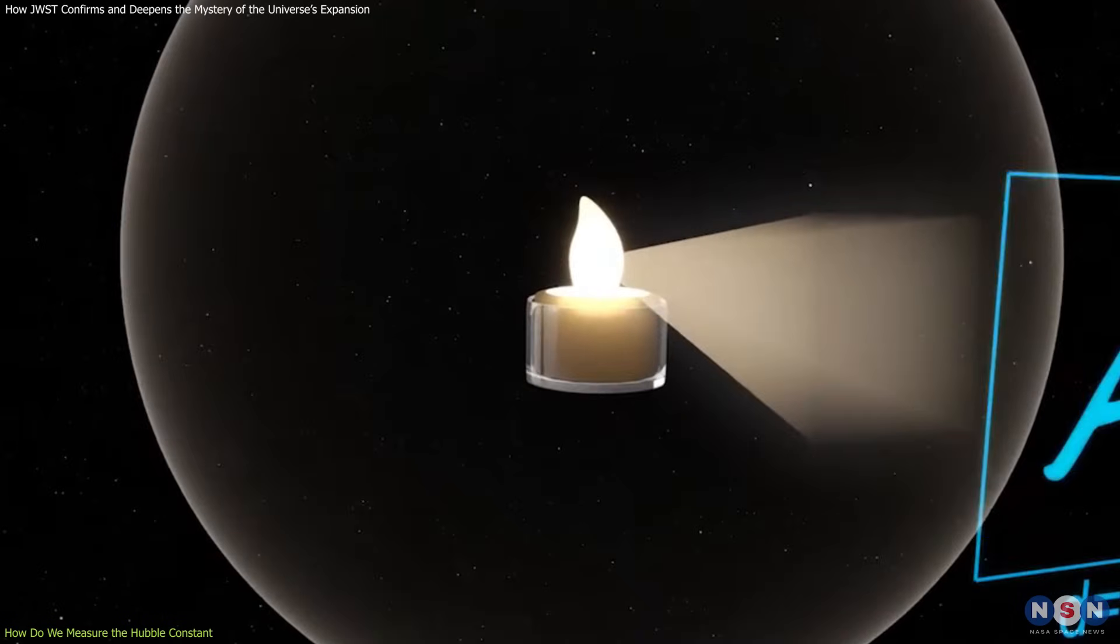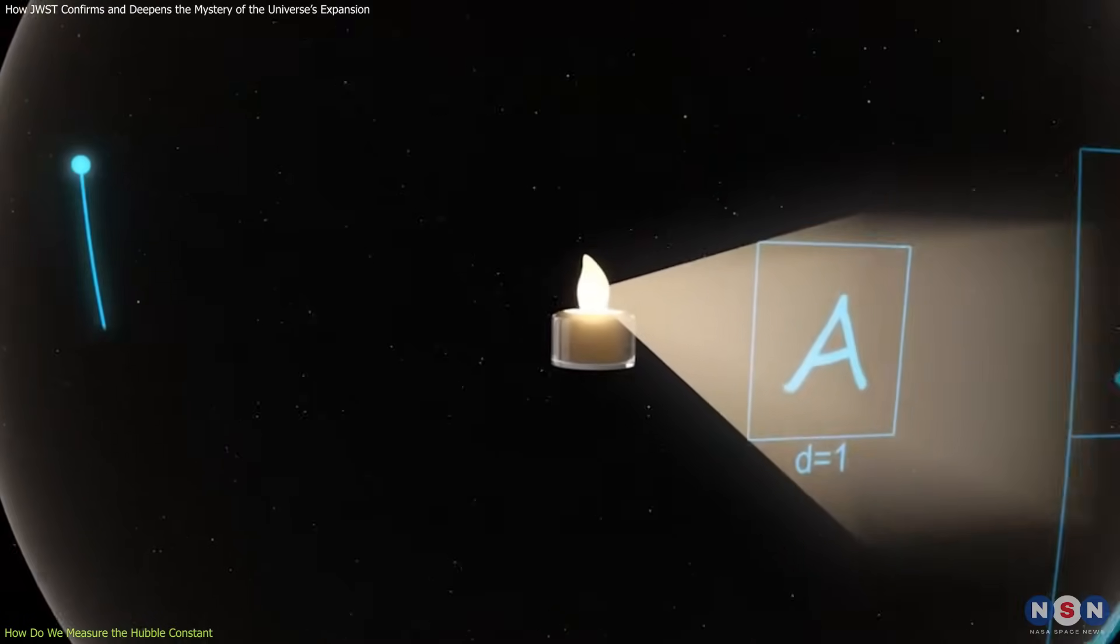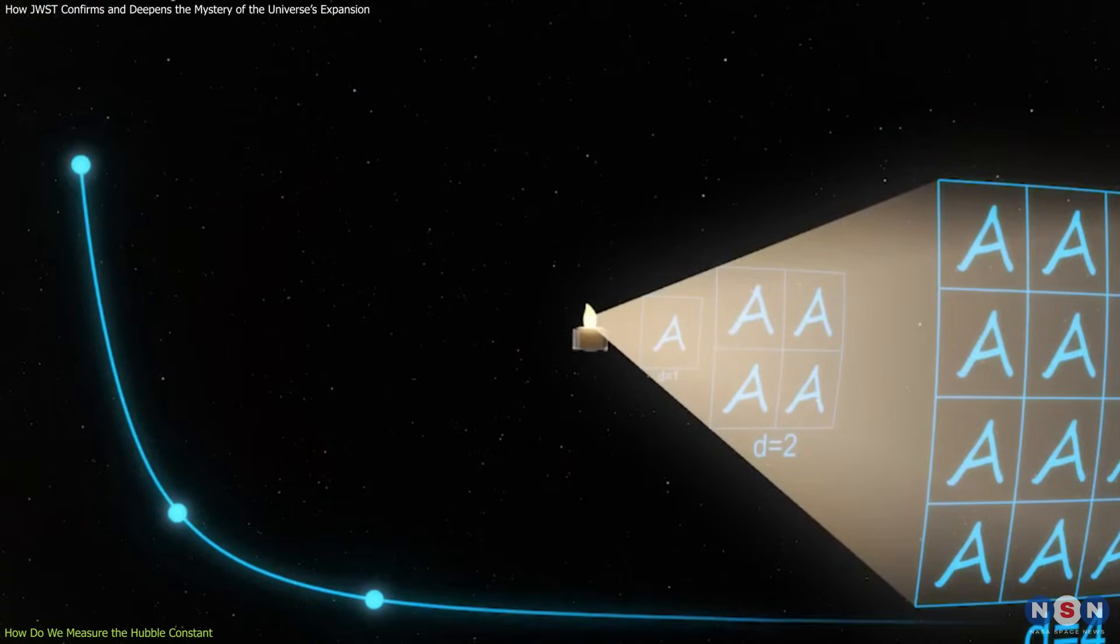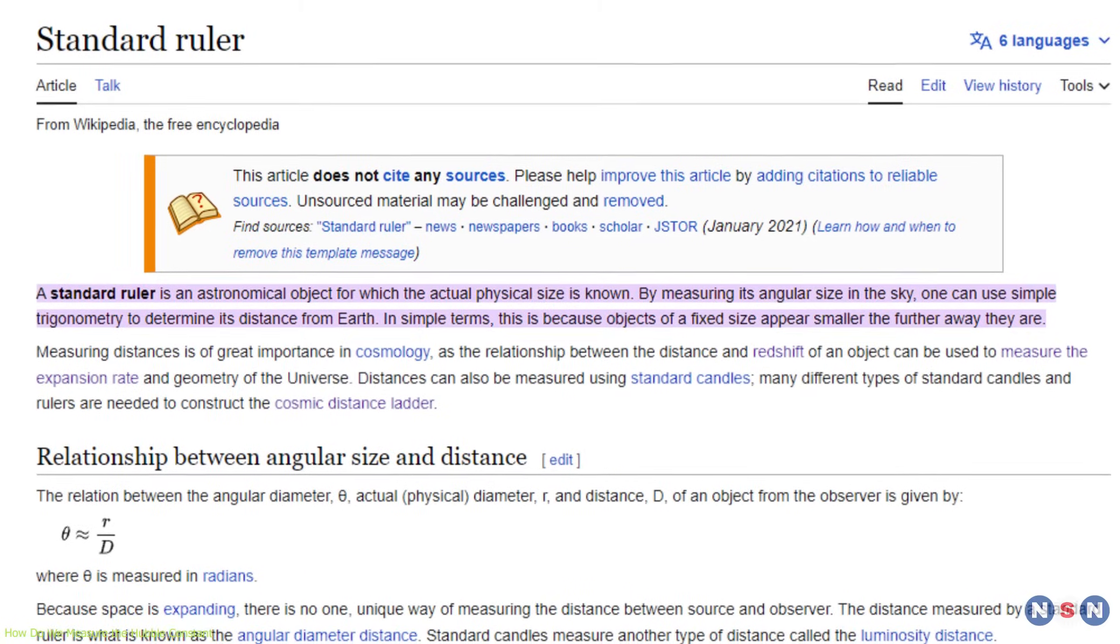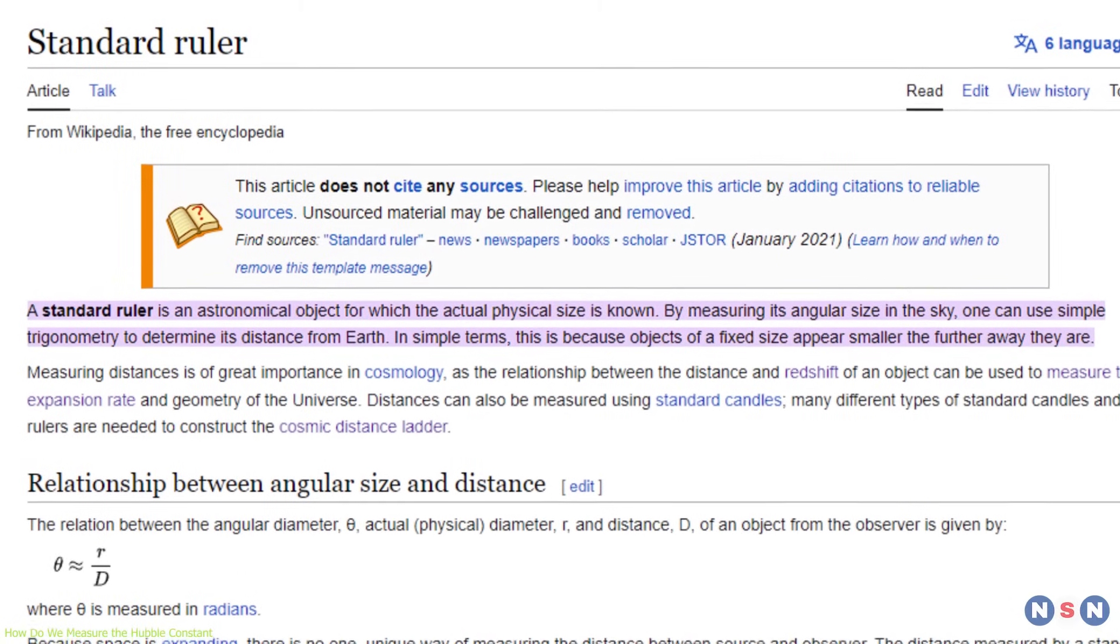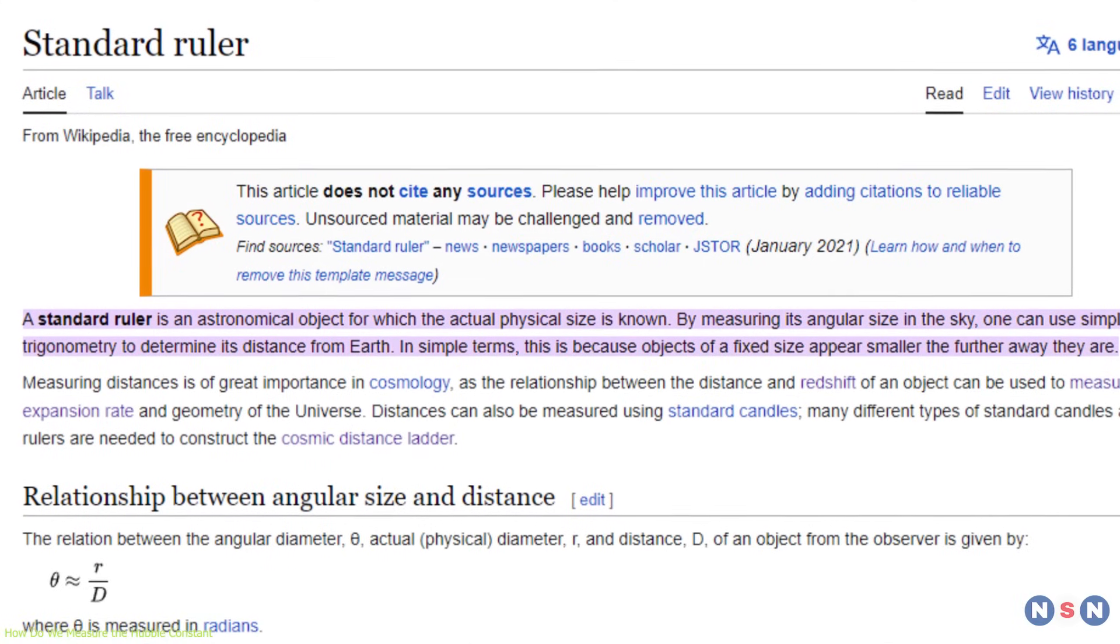A standard candle is an object that has a known brightness, so we can infer its distance by comparing its apparent brightness with its intrinsic brightness. On the other hand, a standard ruler is an object that has a known size, so we can infer its distance by comparing its apparent size with its intrinsic size.